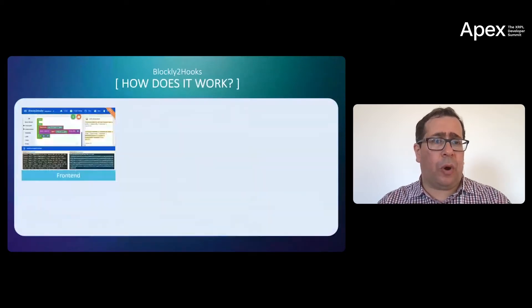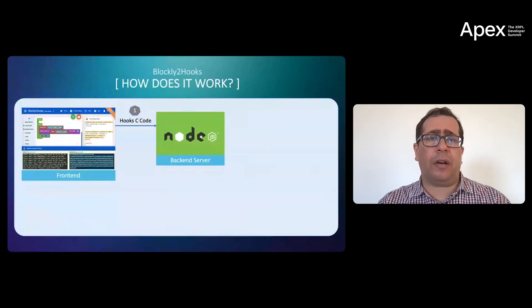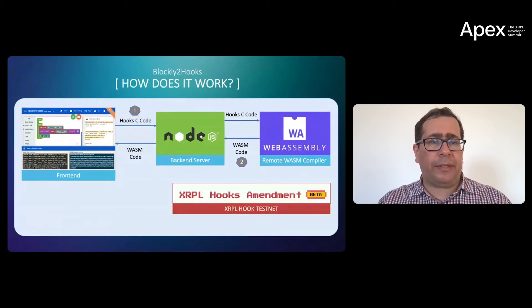How does it work? We have our front end and backend server. In the first step, we send the compiled or generated Hooks C code, and forward it to a remote WASM compiler. Once the compiler finishes, it returns back the WASM codes, and we forward it back to the front end.